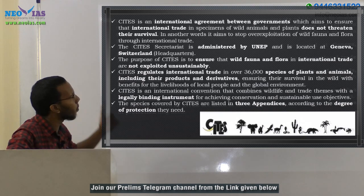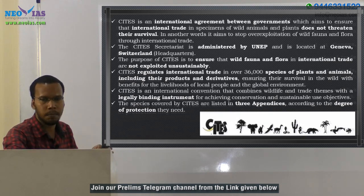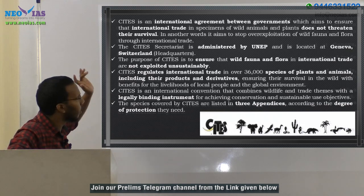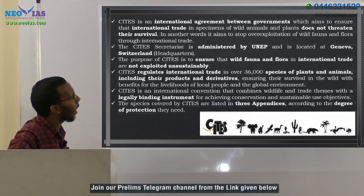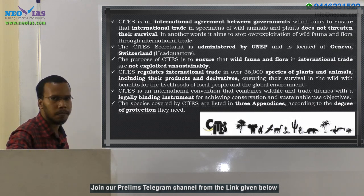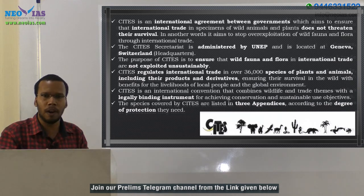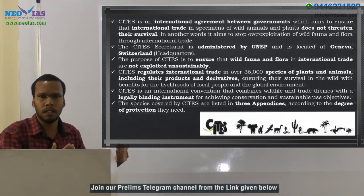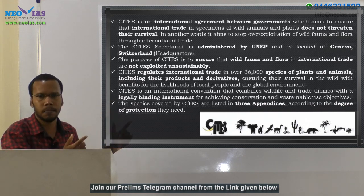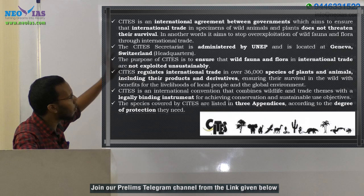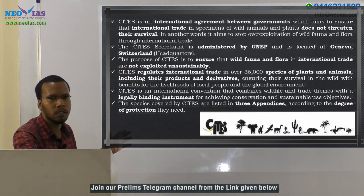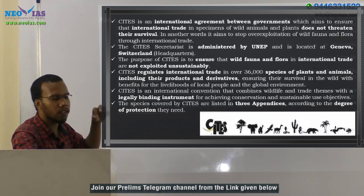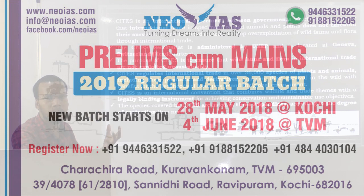CITES is an international agreement between governments — it is a treaty between governments which aims to ensure that international trading in specimens of wild animals and plants does not threaten their survival. So in order to ensure international wildlife trade is not a threat to their survival, CITES aims to stop overexploitation of wild fauna and flora through international trade.